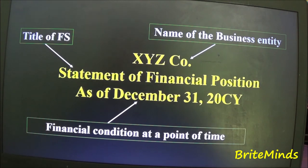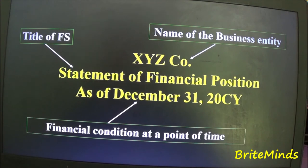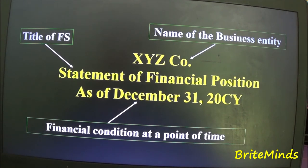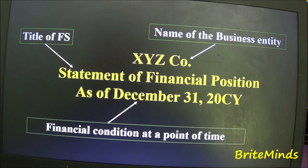The reason the SFP uses 'as of' is because its accounts are permanent — also called real accounts — meaning the amounts are cumulative from the beginning of the life of the company and are carried forward to the next period. Unlike temporary accounts, which are not carried forward. That is why the date 'as of December 31, current year' shows the financial conditions at a specific date.